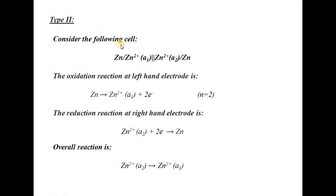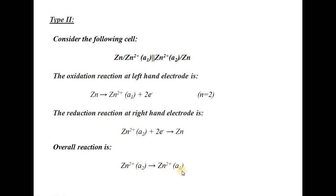Now considering the second type: a zinc rod is dipped in zinc²⁺ ions of activity A1, connected through a salt bridge to another cell where a zinc rod is in contact with zinc²⁺ ions of activity A2. The oxidation reaction at the left: zinc releases 2 electrons to give zinc²⁺ ions. Reduction at the right: zinc²⁺ ions take up 2 electrons to convert to zinc. The overall reaction is transfer of 1 mole of zinc²⁺ from the solution of activity A2 to the solution of activity A1.